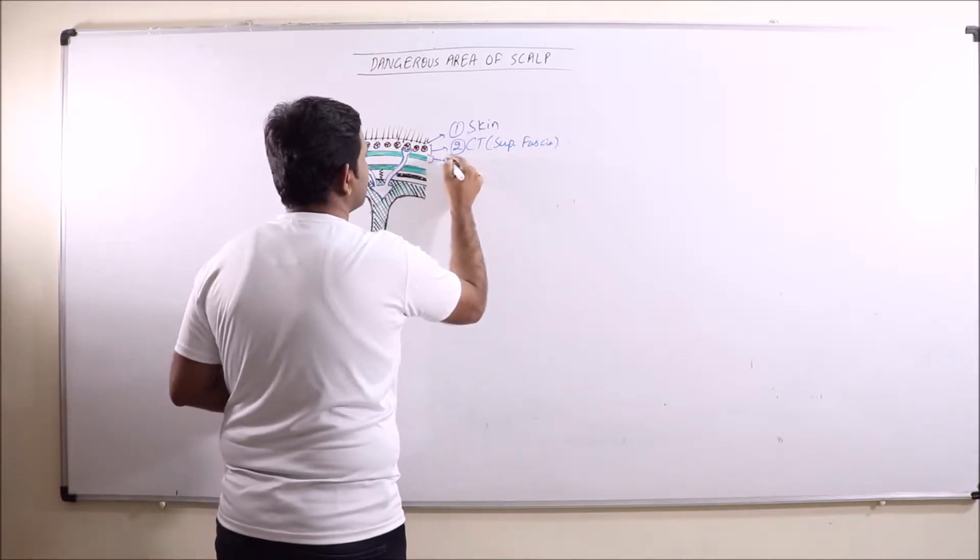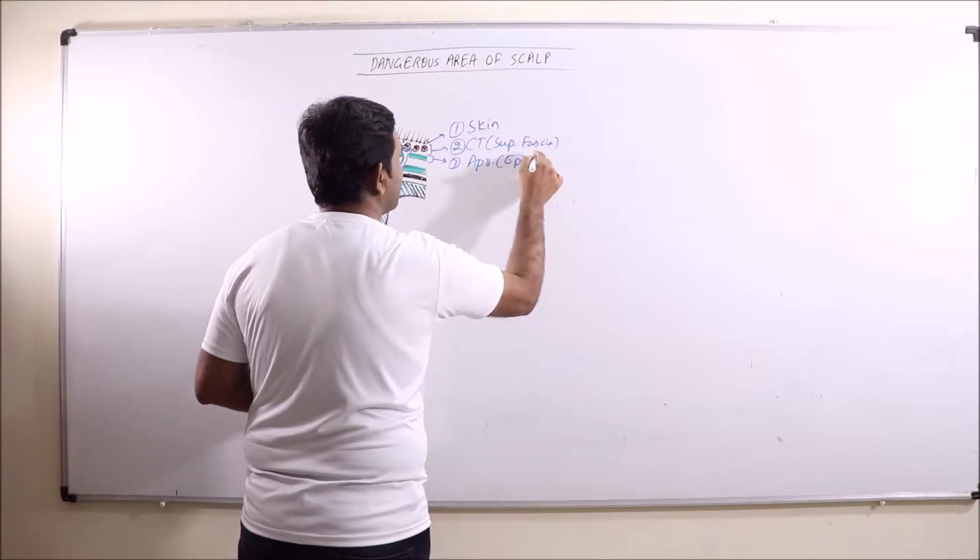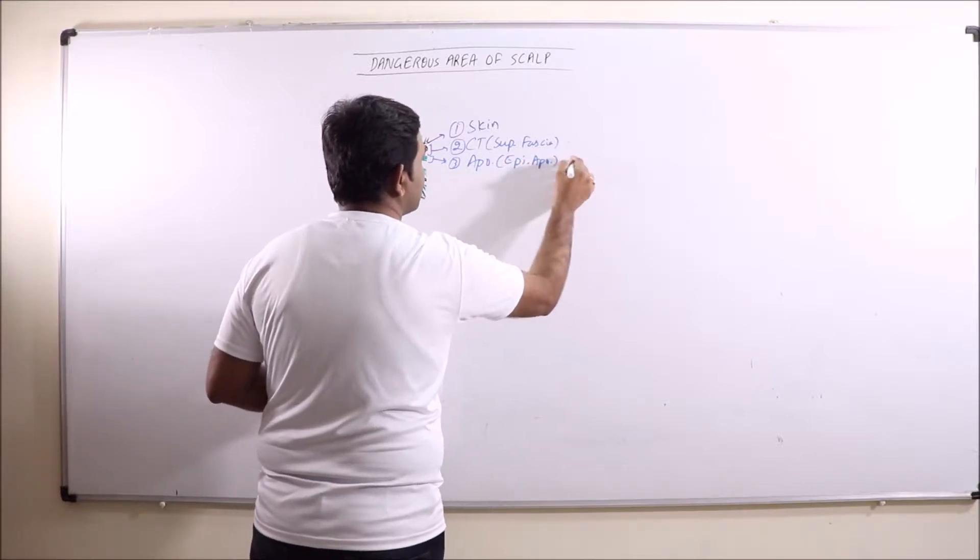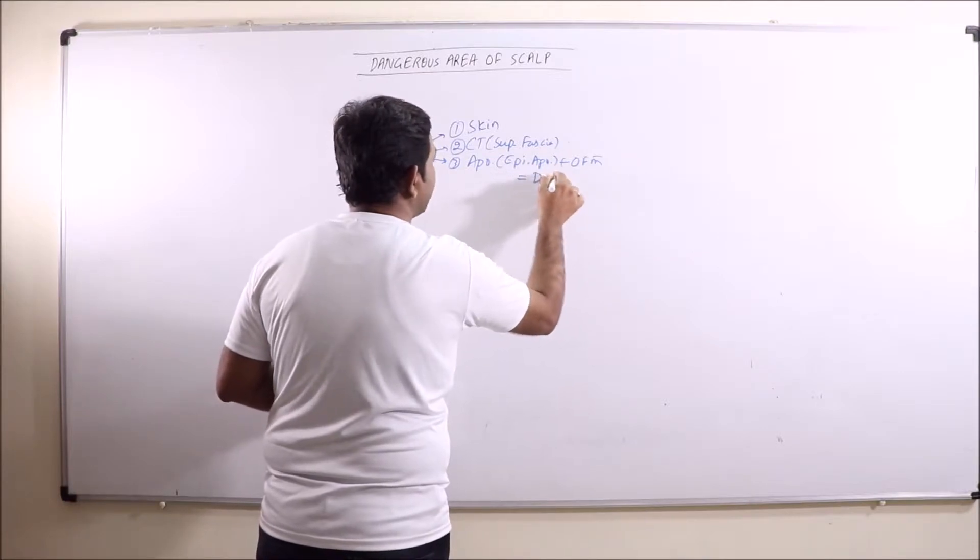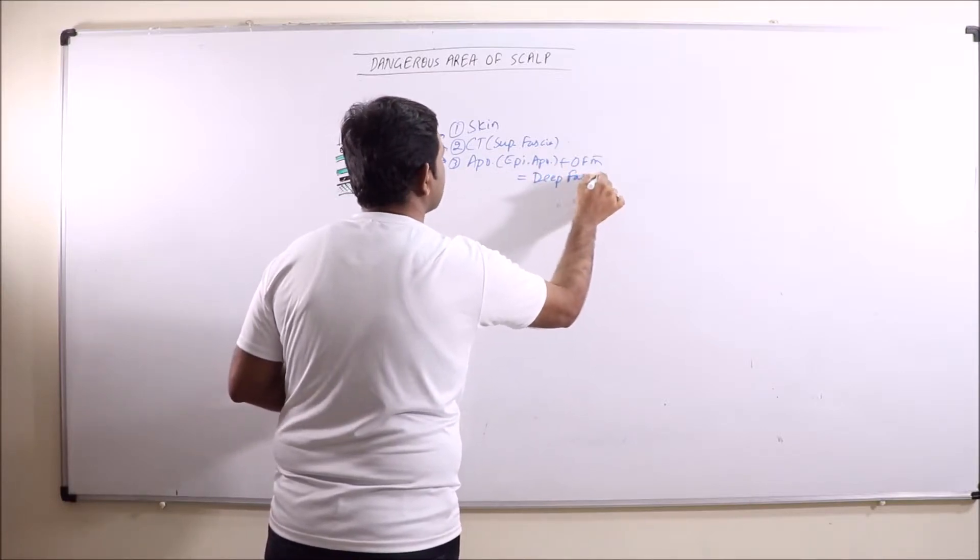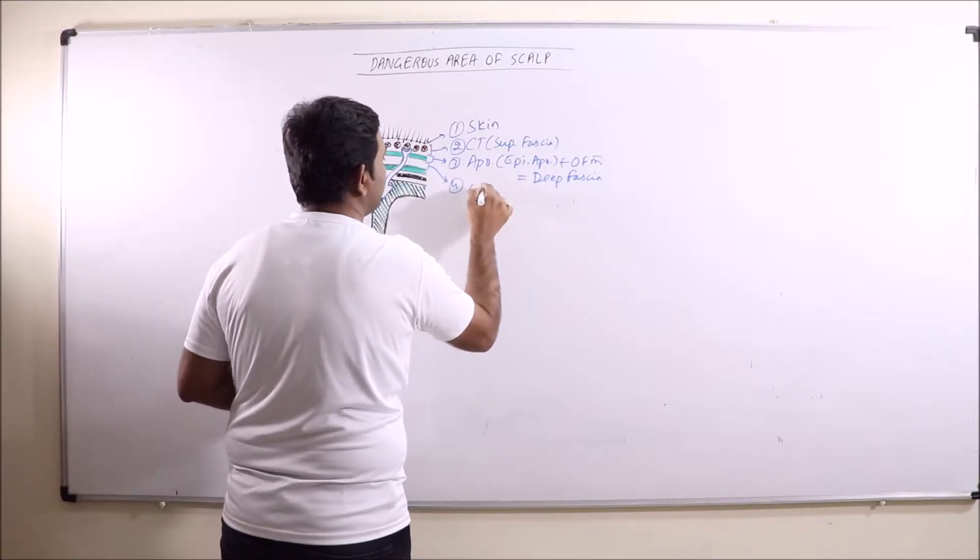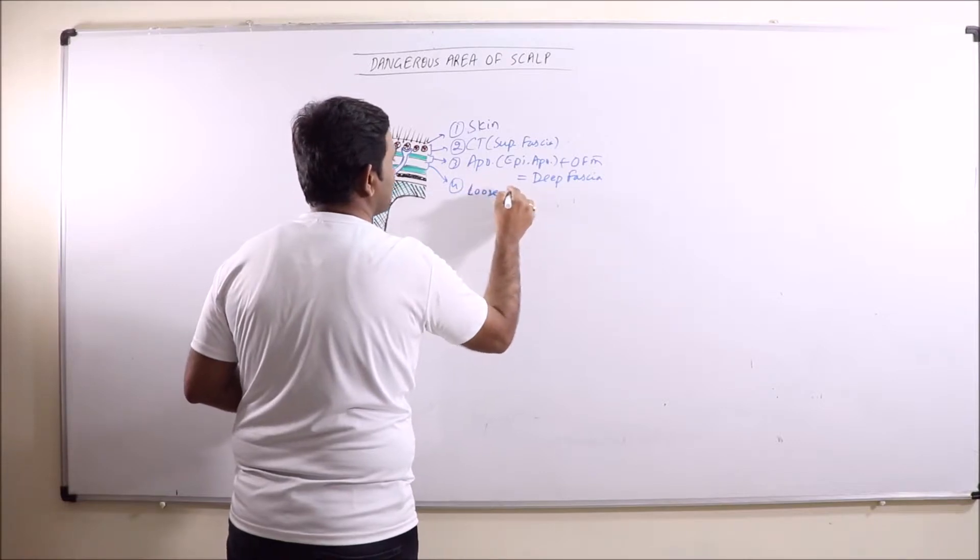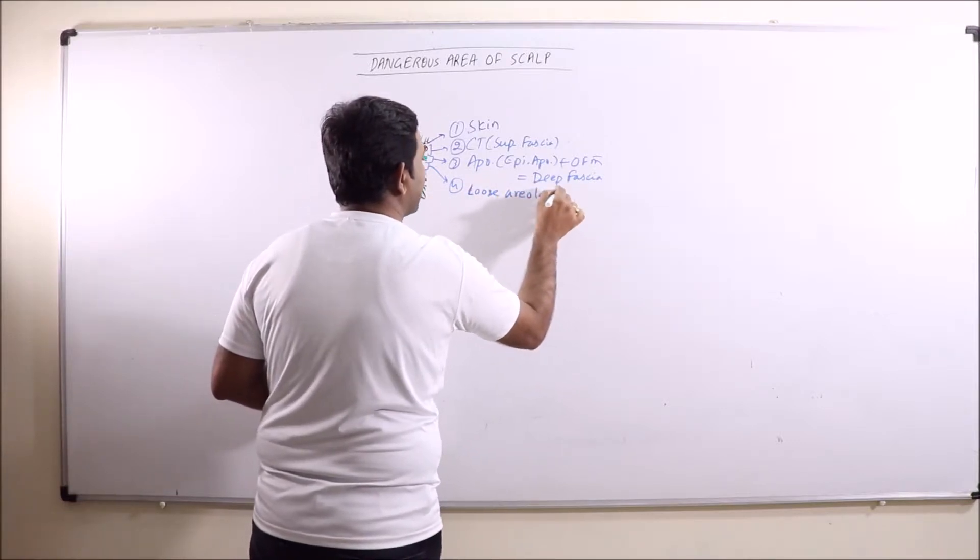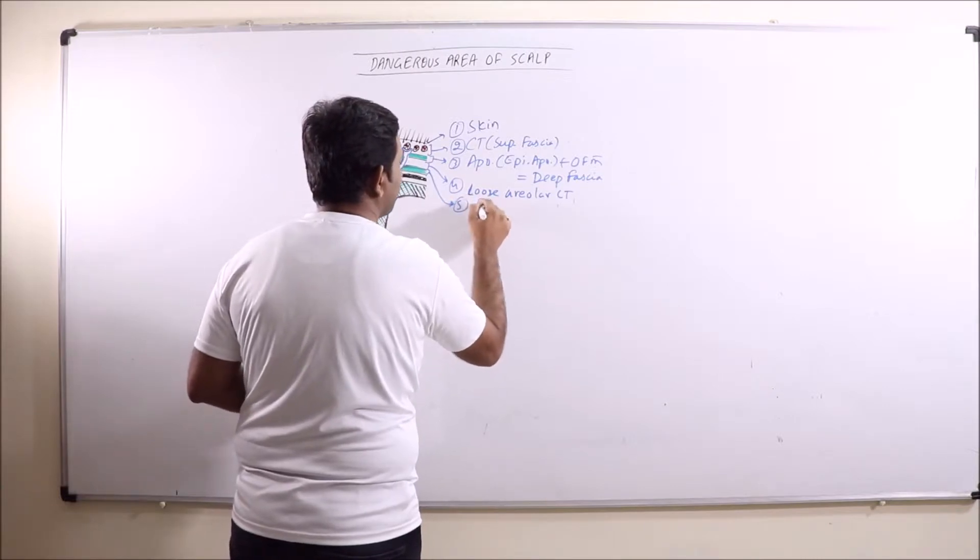The third layer is of aponeurosis, that is epicranial aponeurosis which along with occipitofrontalis muscle is known as deep fascia. Then this layer is of loose areolar connective tissue and the lowermost layer is of pericranium.